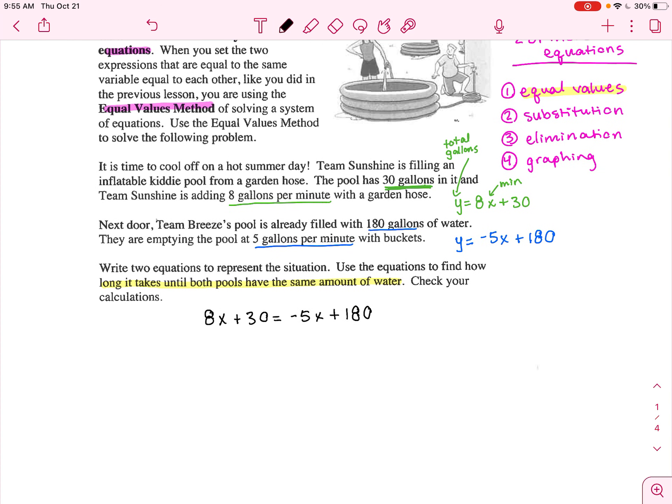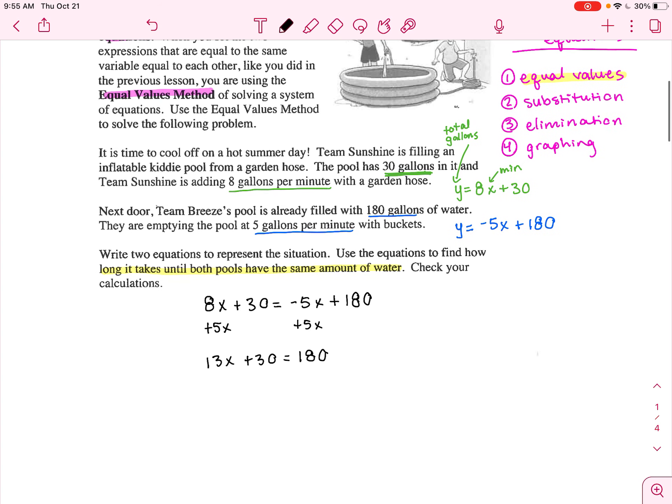Once you do that, you know what to do from here. You simply have to solve for x. So we get 13x plus 30 equals 180 after we add 5 to both sides. Now let's subtract 30 from both sides. We get 13x equals 150.